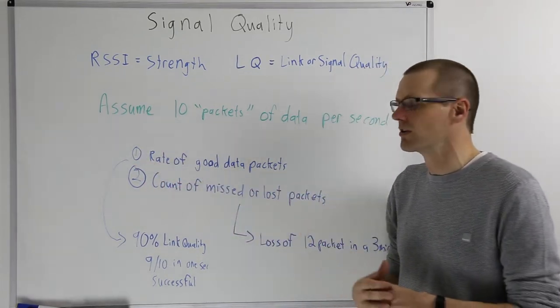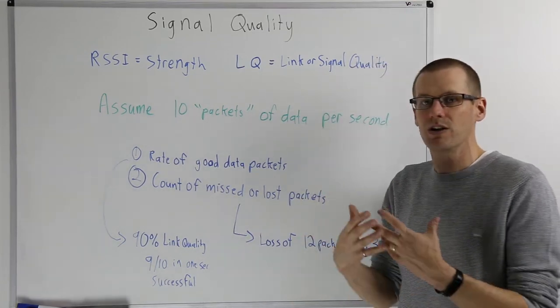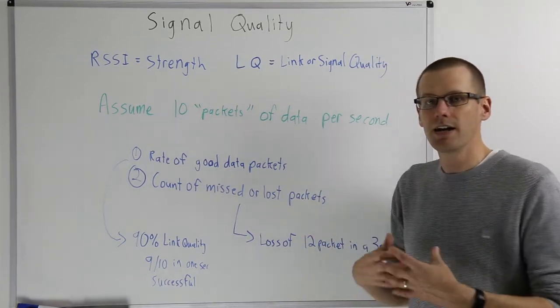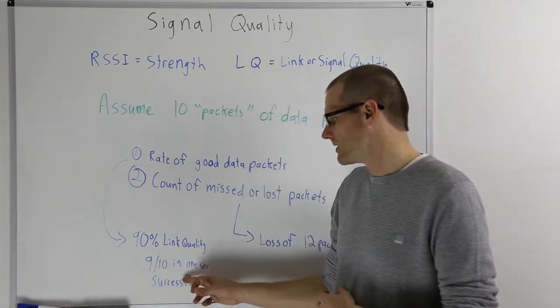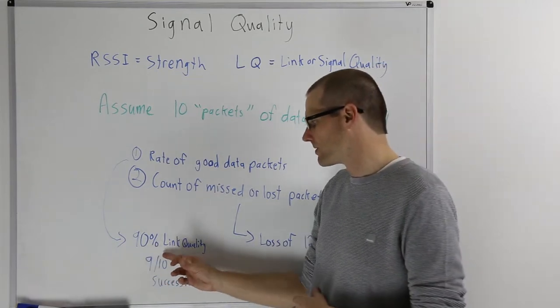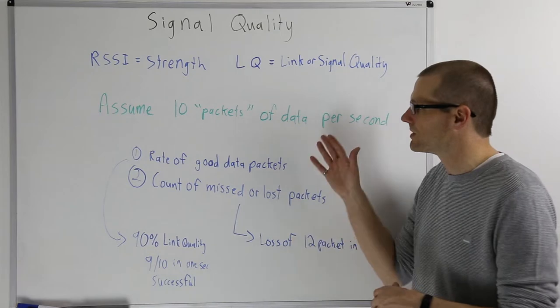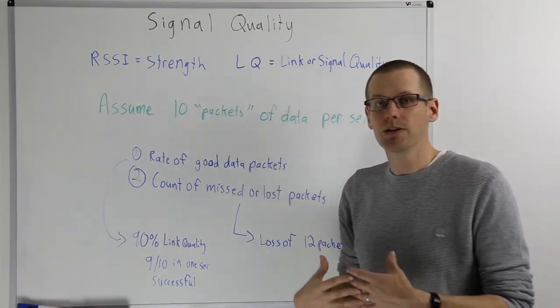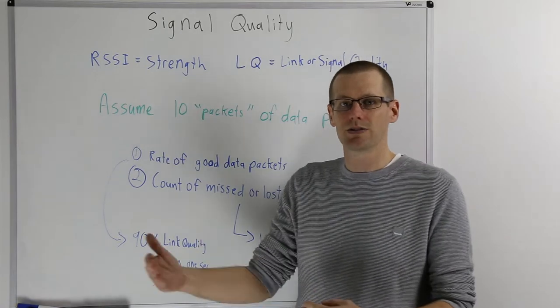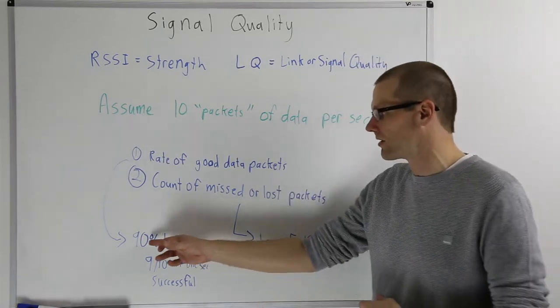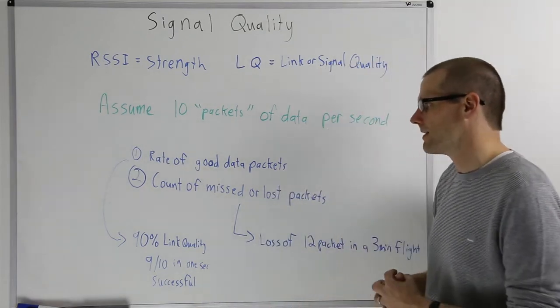Now there's ways that we can actually represent this on the radio. The first way is the rate of good packets of data. Let's say in that 100 sent over a 10 second period, 90 of them went through representing nine out of 10 in one specific second or 90%. This would refer to our link quality for that specific scenario. If it happened to be 98 of the 100 packets made it to our receiver, then your percentage is going to look like 98%, and that's going to be a fairly good link quality right there.